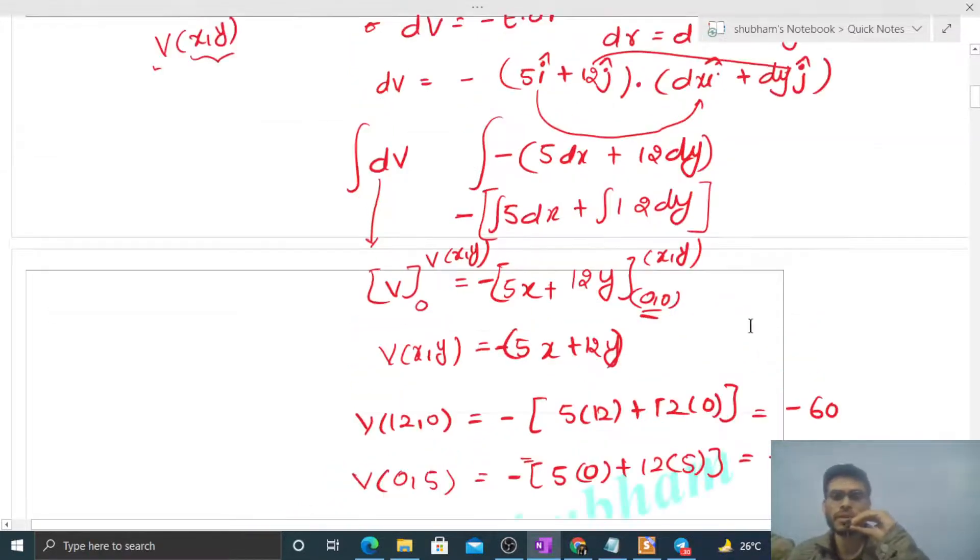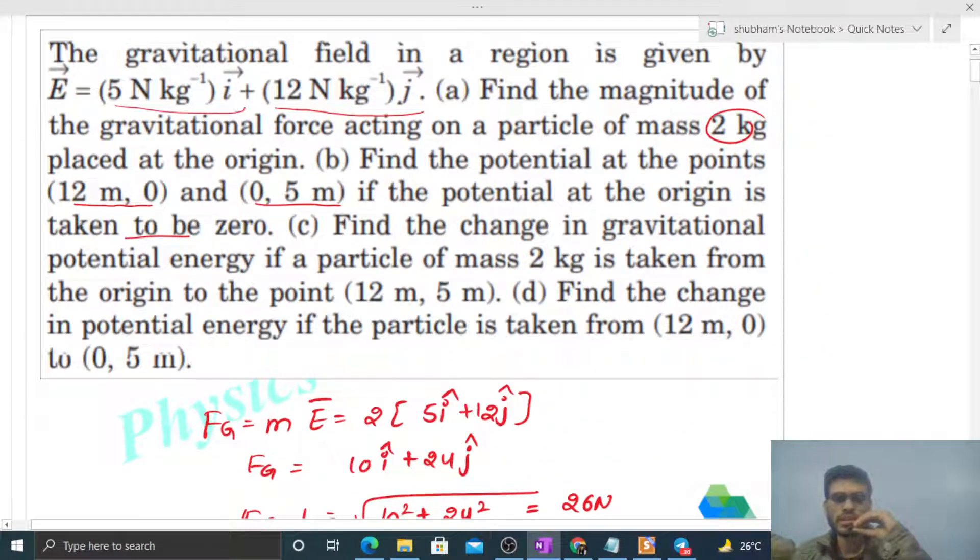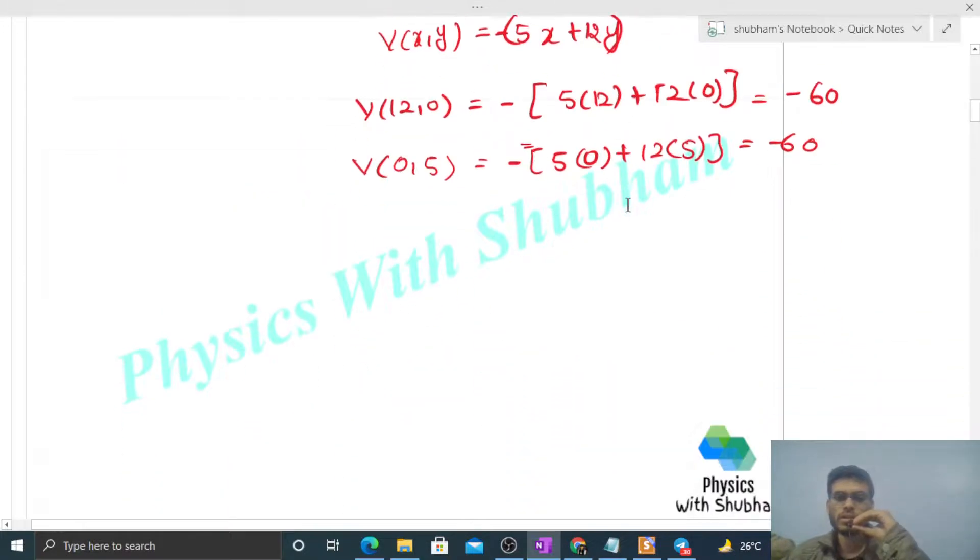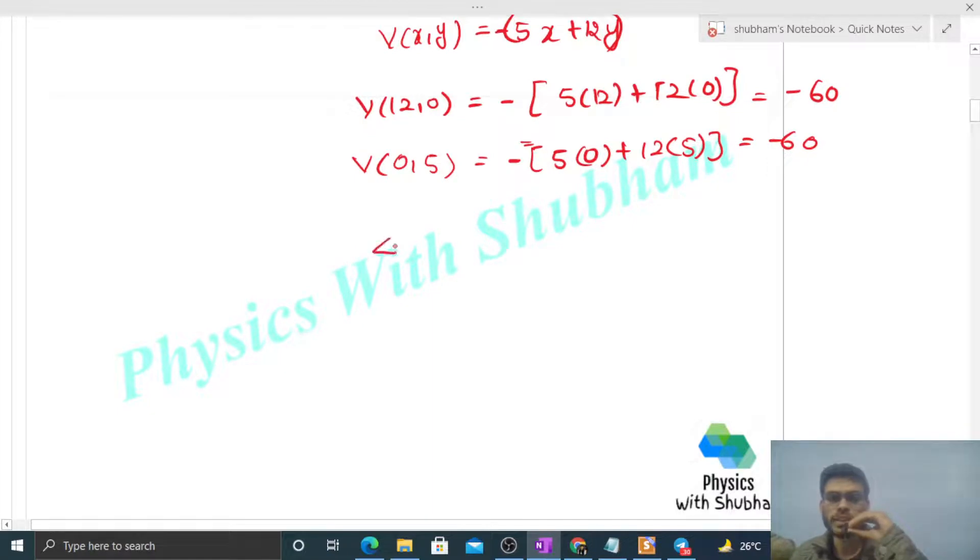Part (c): Find the change in gravitational potential energy if a particle of mass 2 kg is taken from the origin to point (12,5). Change in potential energy is mass times change in potential. Mass is 2, and change in potential is V_final - V_initial. Final position is (12,5) and initial is (0,0).